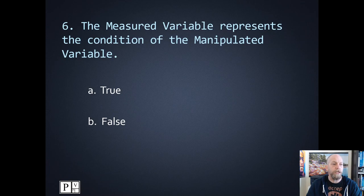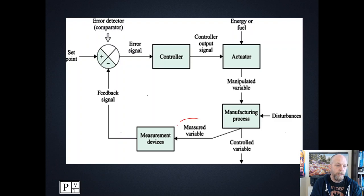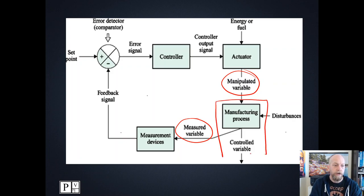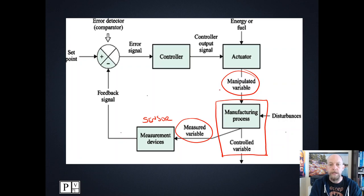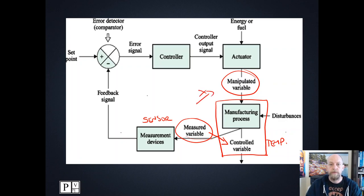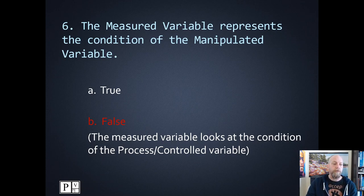Number six: the measured variable represents the condition of the manipulated variable. The measured variable is right here and we're saying it looks at the manipulated variable — but there's something in between. The manipulated variable is like steam flow; you're manipulating steam flow to ultimately control temperature. The measured variable is what your sensor is looking at. Your sensor is measuring the temperature — the controlled variable — not the steam flow. So the measurement device is looking at our control variable, not the manipulated variable. This one is false.